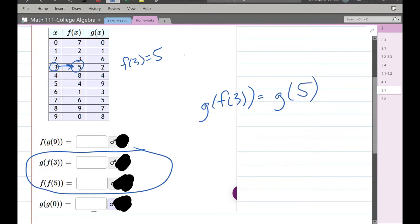I replaced f of 3 by 5. Now, the g function is inputting the 5. Here's the input of 5. Now we're applying the g function, which is the last column. That's going to go over here and output a 9.